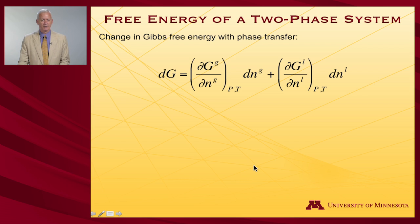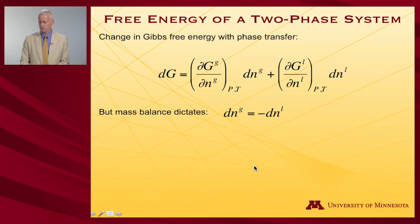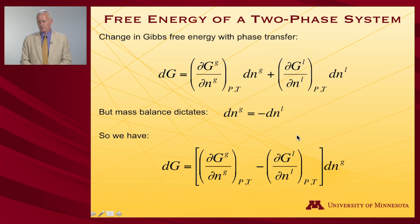Putting that equation on a new slide, there is a phenomenon of mass balance: anything I put into the gas phase had to come out of the liquid phase — they're in equilibrium with one another. So the differential with respect to gas molecules is the negative of the differential with respect to liquid molecules. That means I can replace dn_liquid with minus dn_gas, and I end up with this expression for the change in free energy.